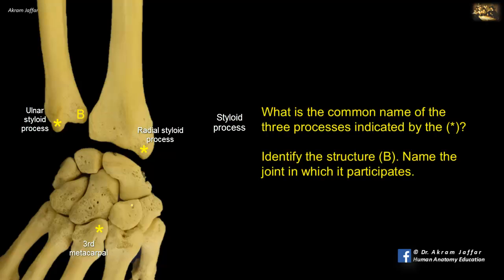B is the head of the ulna. It lies next to the styloid process and articulates with the ulnar notch of the radius at the distal radio-ulnar joint.